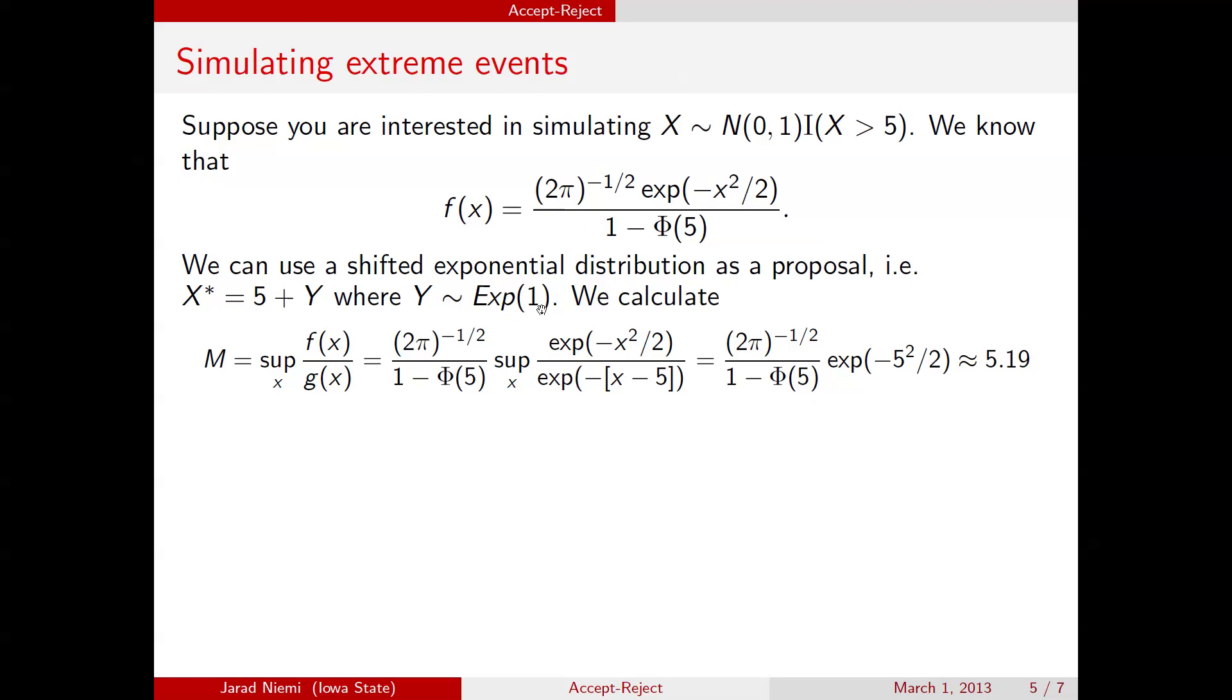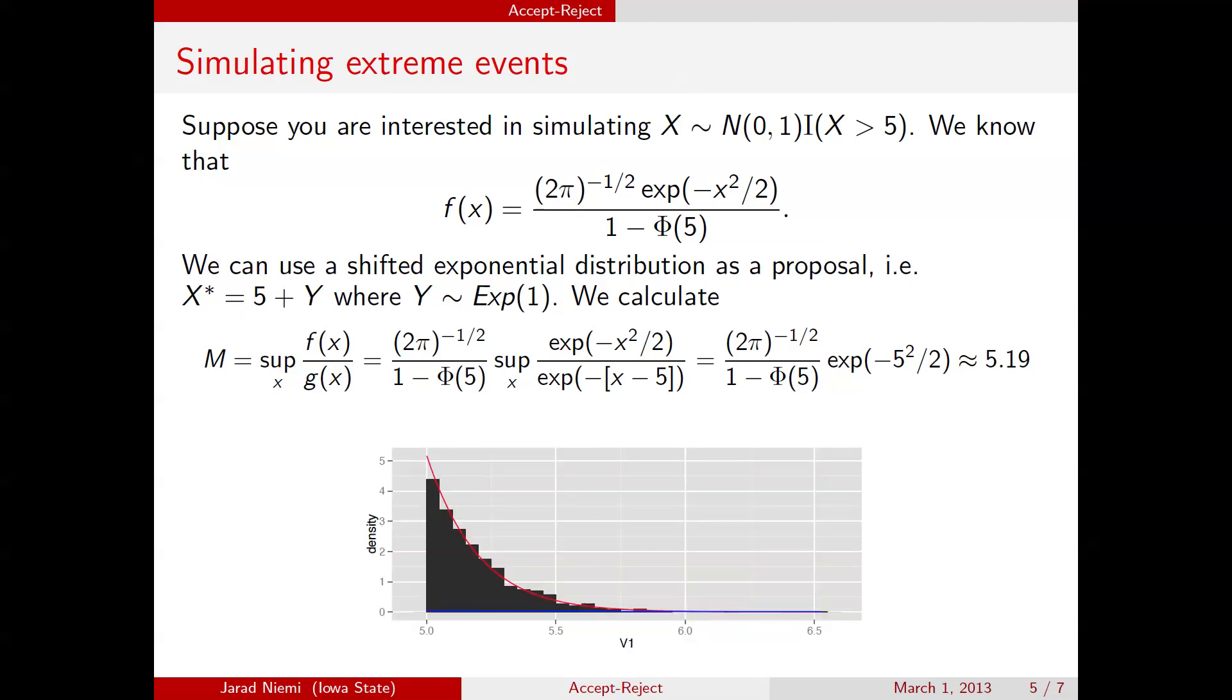And now we can propose samples from this, which means proposing samples from an exponential 1 and adding 5. We can evaluate that ratio, f of x over m times g of x, and see if it's less than the uniform that we've sampled. And if we do that repeatedly, we get this density right here. Here where the histogram shows samples from f, and the red line is the true density for f.